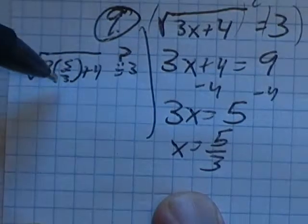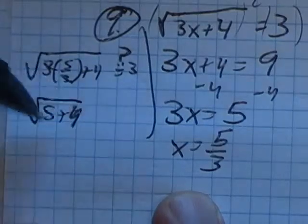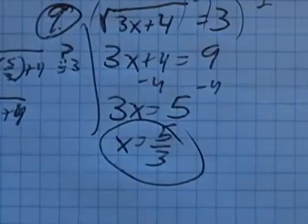3 times 5/3, the 3 divided by 3 is 1. So this is the square root of 5 plus 4. Oh yeah, that's 9, that's 3, good. It works.